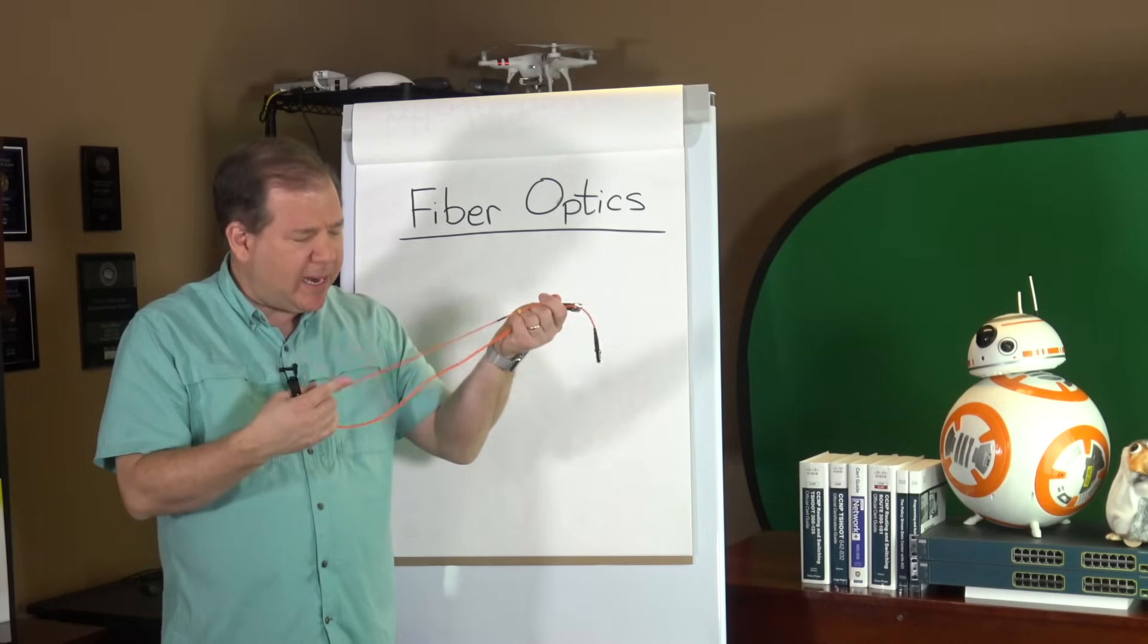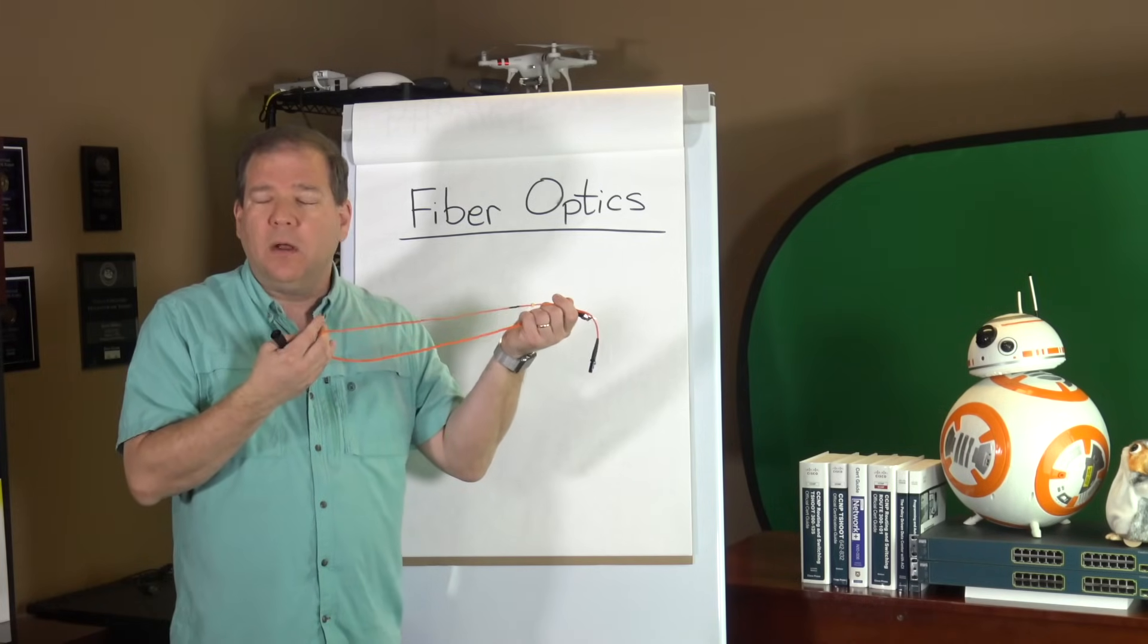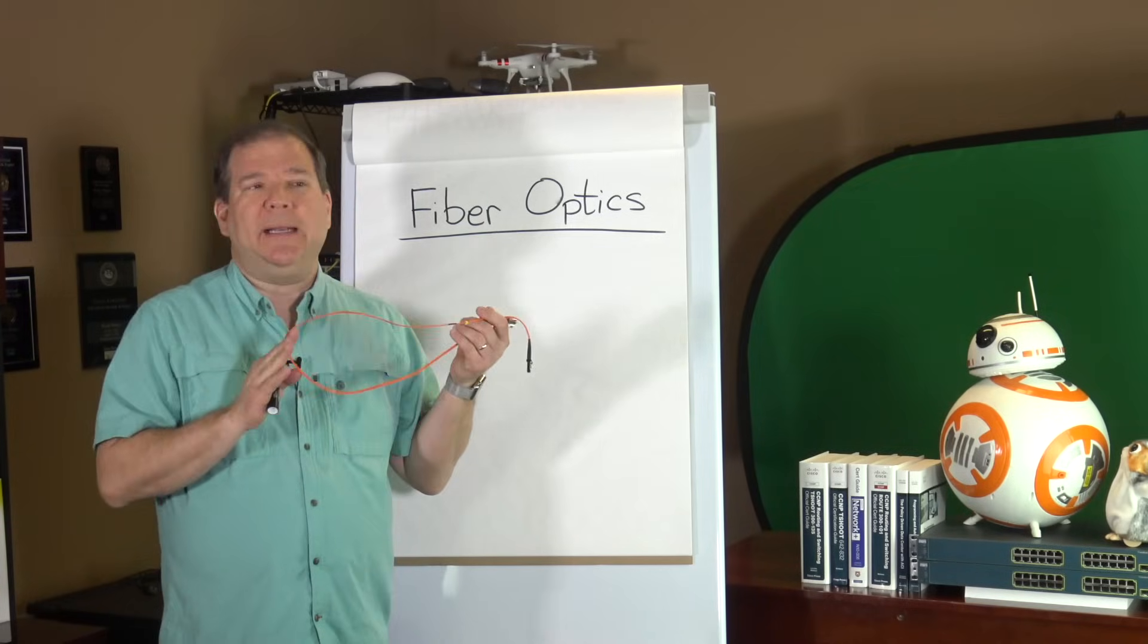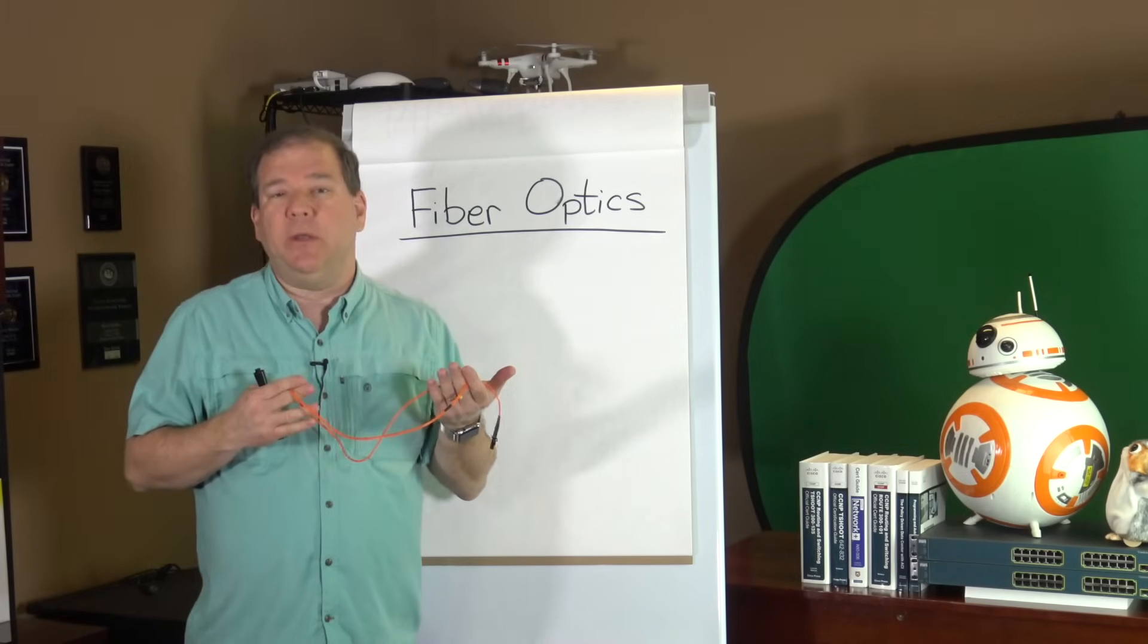How do we transmit binary data, ones and zeros, over a fiber optic cable? Well, it's going to use light. We might use LEDs. Commonly we use lasers.